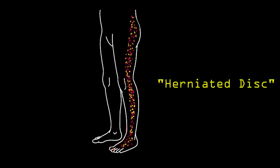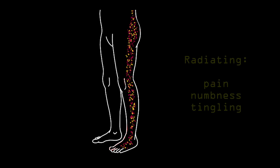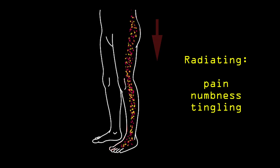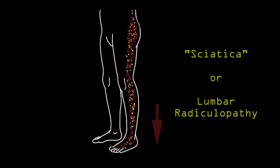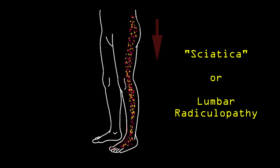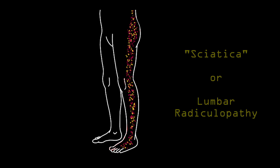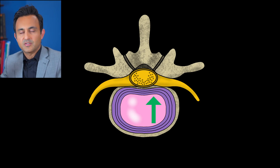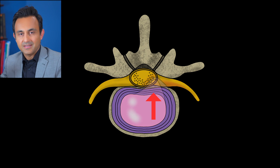One of the most common conditions I see in my clinical practice is patients with herniated discs who are having shooting pain, numbness, tingling, radiating into the leg. This condition is called sciatica or lumbar radiculopathy — they both mean the same thing. Today I'm going to show you an interesting case of a patient with a herniated disc who was having exactly this problem.